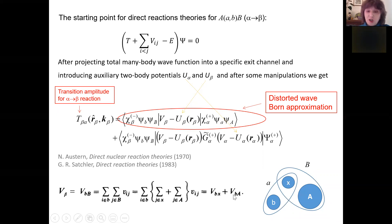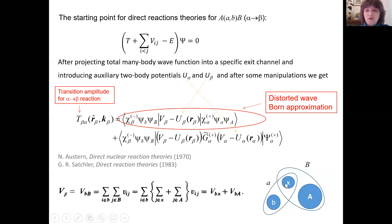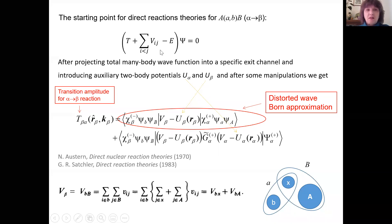If we make a further approximation that the auxiliary potential cancels the contribution from the interactions of nucleons in B with A, we end up with the interactions between nucleons in X and B. For DP reactions, this is the interaction between the transferred neutron and the outgoing proton. The key point is that the starting Hamiltonian contains two-body interactions only.